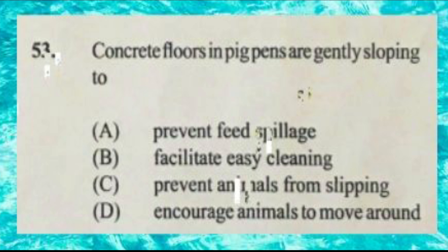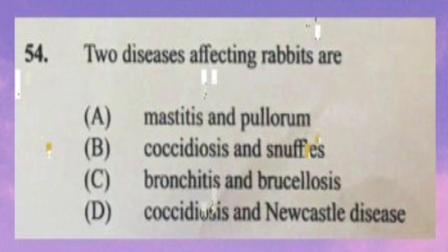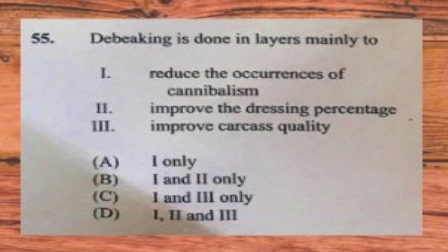Question number fifty-four: two diseases affecting rabbits are A) mastitis and pullorum, B) coccidiosis and snuffles, C) bronchitis and brucellosis, D) coccidiosis and Newcastle disease. The answer is B, coccidiosis and snuffles. Question number fifty-five: debeaking is done in layers mainly to A) reduce the occurrence of cannibalism, B) improve dressing percentage, C) improve carcass quality. The answer is A, one only — to reduce cannibalism.